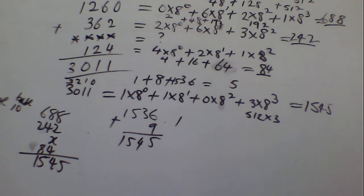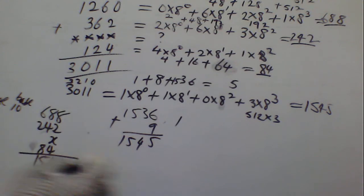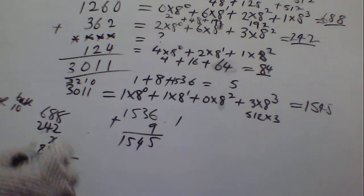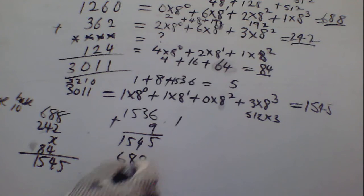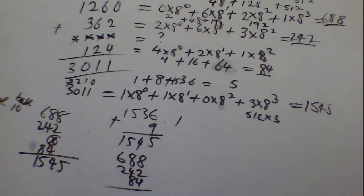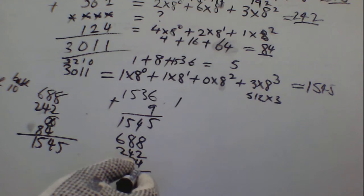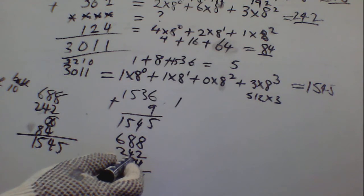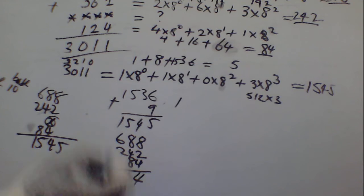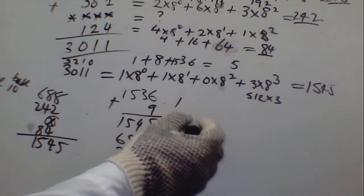So from here we can now add and solve in base 10. So we proceed — add all of this. 688, 242, 84 — leave S alone. So let's add these terms. This gives us 4, carry 1. This gives us 16 plus 4 equals 20, plus 1 is 21 — carry 2. This gives us 8 plus 2 equals 10. So we now have 10.1.14, plus 1.1.4, plus 1.1.2, which is 1014.